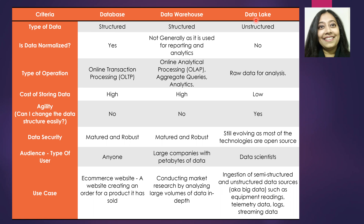But when it comes to data lakes, the data is stored in an unstructured manner. For example, you could store them as flat files, or as raw data received from somewhere — which could be a chunk of XML or plain simple text. You could store data in pretty much any format in a data lake. That's one of the key differences: the type of data stored. Data lakes store unstructured data.